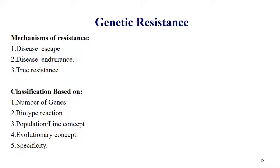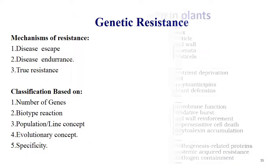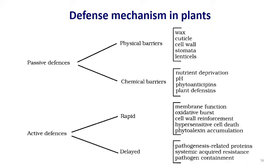Coming to genetic resistance. Mechanisms of resistance are disease escape, disease endurance and true resistance. Classification is based on number of genes, biotype reaction, population or line concept, evolutionary concept and specificity. There are two kinds of defense mechanisms: passive defense and active defense. Passive defense is divided into physical barrier and chemical barrier.